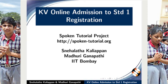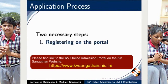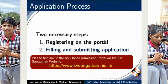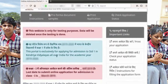Welcome to the Spoken Tutorial on KV Online Admission to Standard 1 Registration. The online application process using the portal has two necessary steps: registering on the portal, and filling and submitting the application form. In this video we will demonstrate the first step of registering on the portal. Please note this portal is exclusively for applying for admission to Standard 1 in Kendriya Vidyalayas all over India.